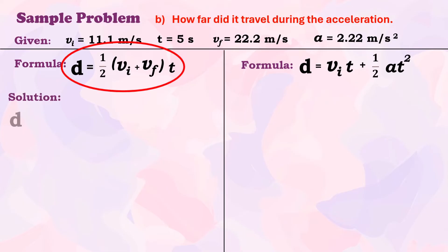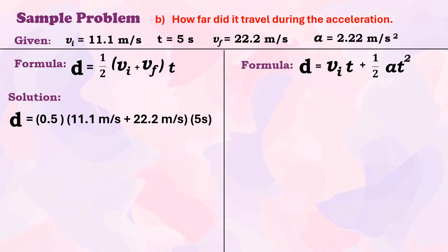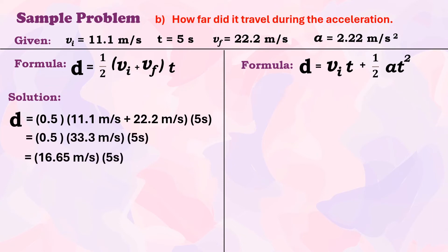Now let us substitute. The ½ is converted to 0.5. Initial velocity is 11.1 m/s, final velocity is 22.2 m/s, and time is 5 seconds. First, we add 11.1 m/s and 22.2 m/s, then multiply by 0.5, giving 16.65 m/s. Then we multiply by 5 seconds to get a final answer of 83.25 meters.